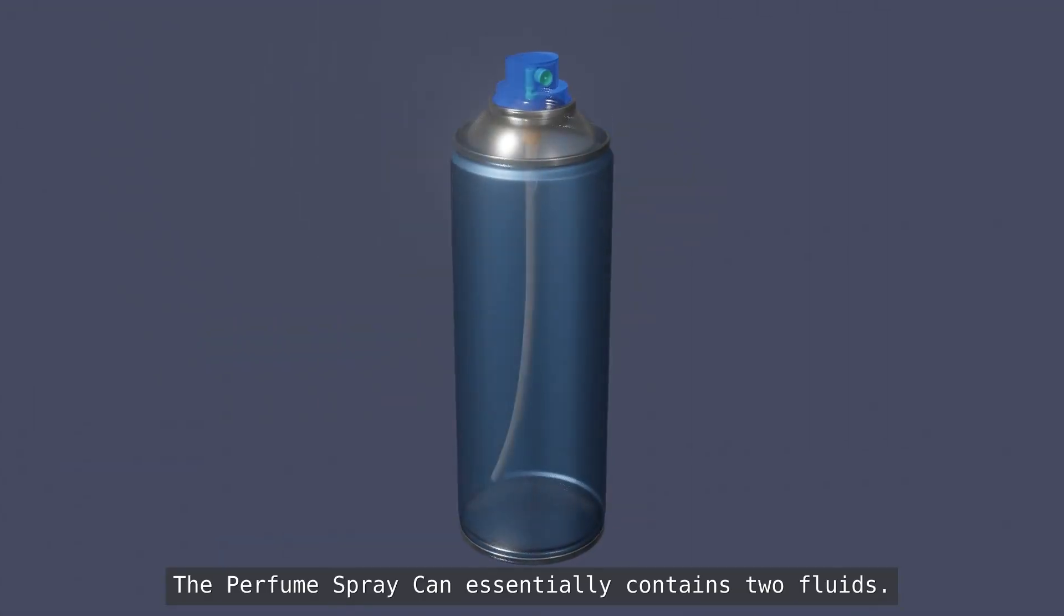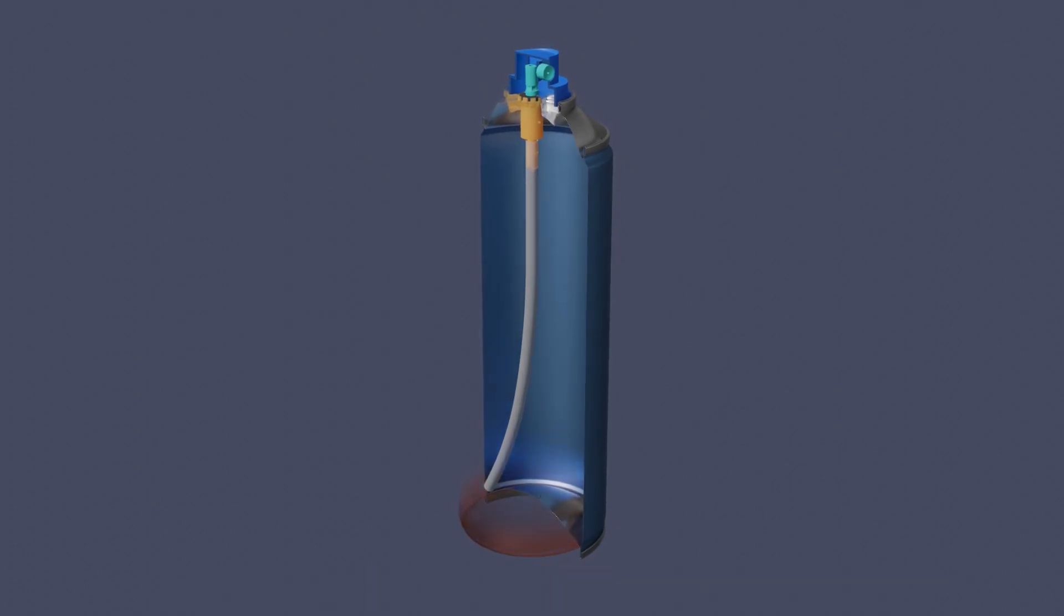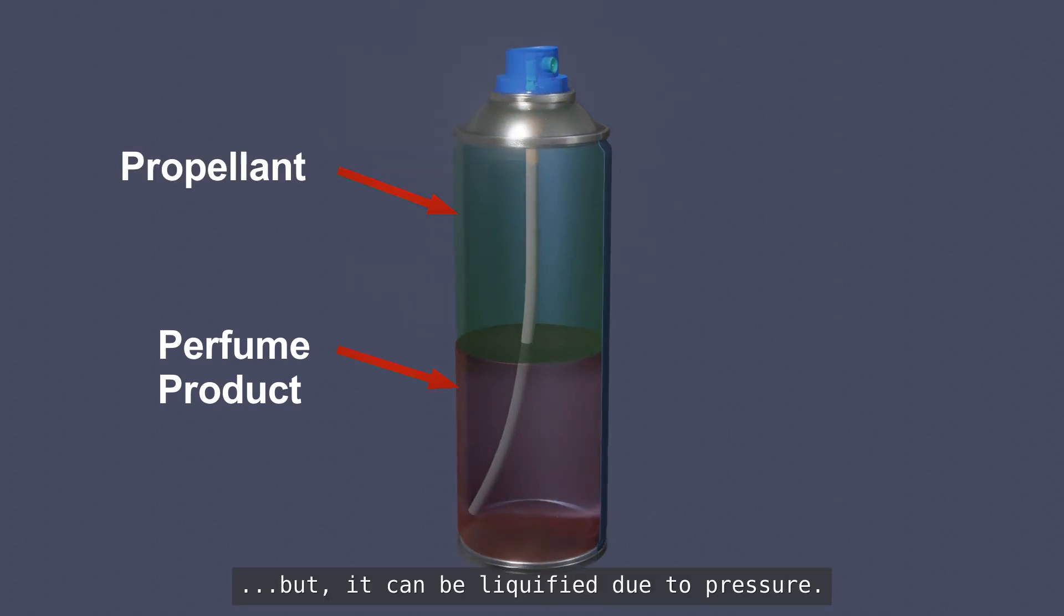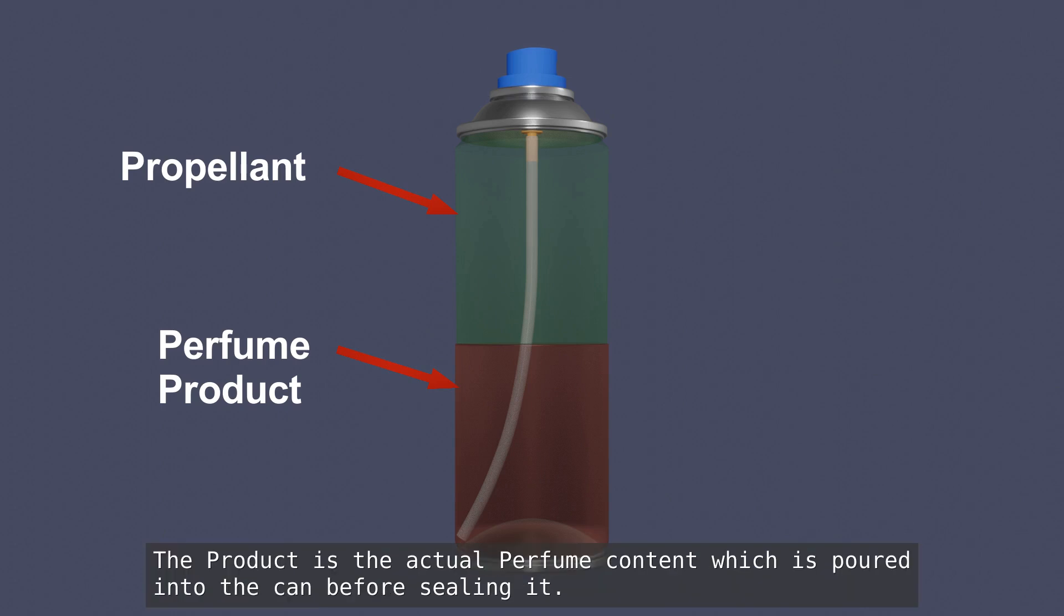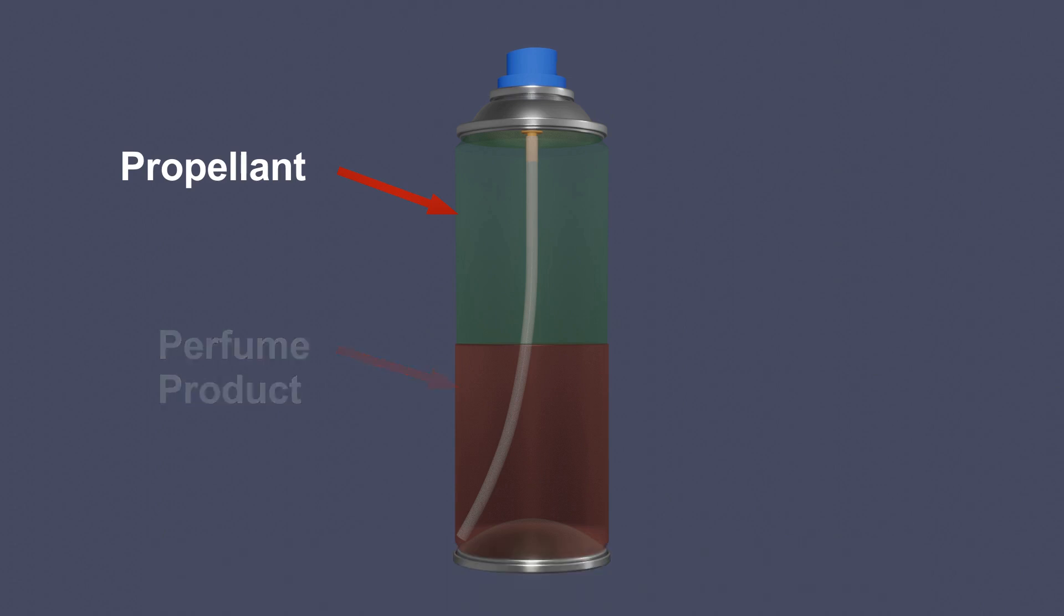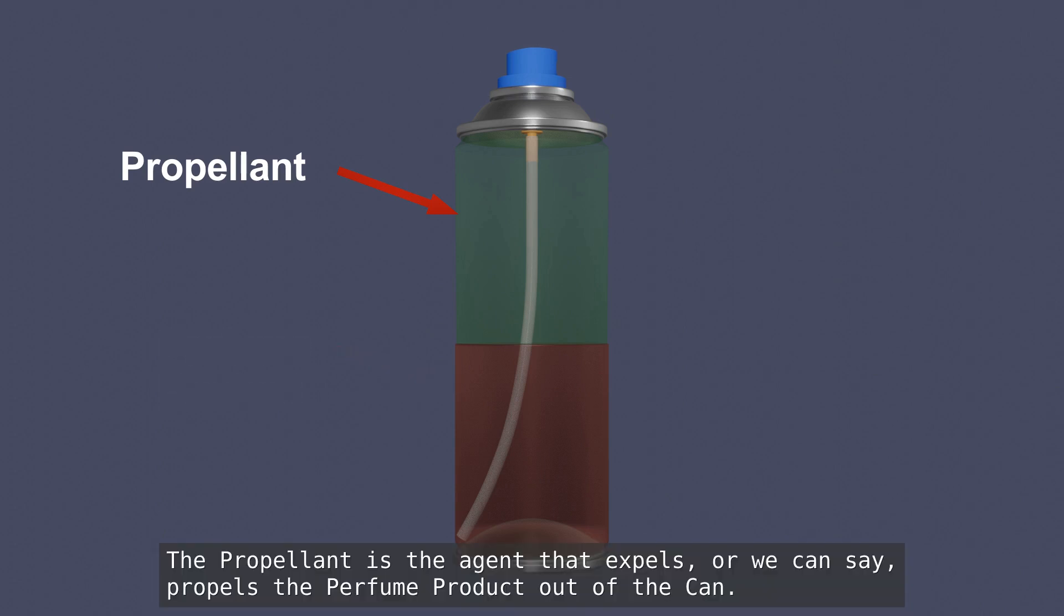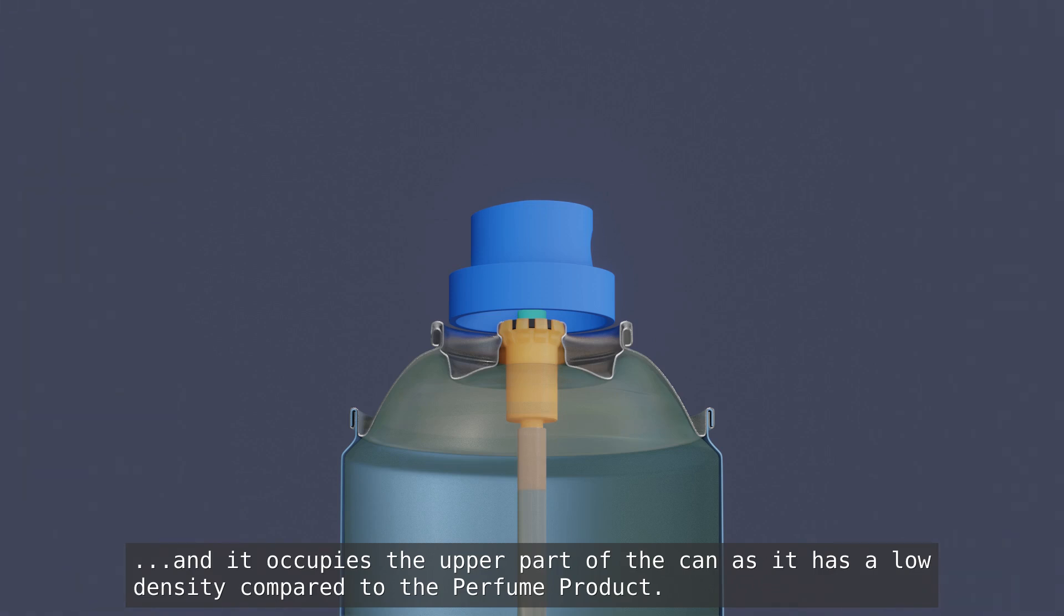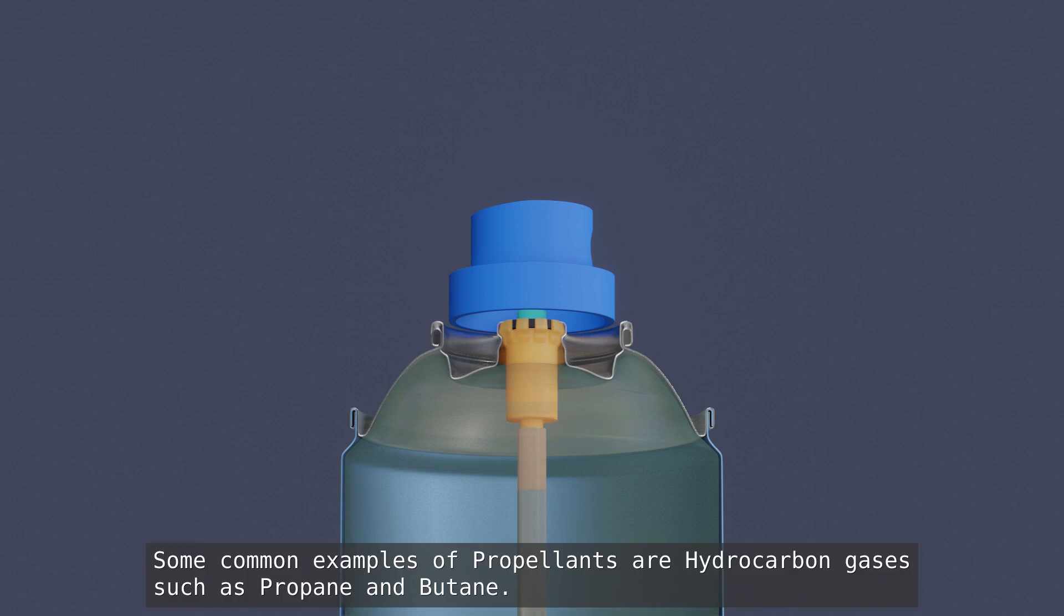The perfume spray can essentially contains two fluids: the product in liquid form and the propellant, usually in gaseous form, but it can be liquefied due to pressure. The product is the actual perfume content which is poured into the can before sealing it. The propellant is the agent that expels, or propels, the perfume product out of the can. It's pumped in through the valve system under pressurized conditions and it occupies the upper part of the can as it has a low density compared to the perfume product. Some common examples of propellants are hydrocarbon gases such as propane and butane.